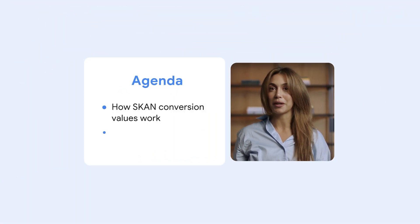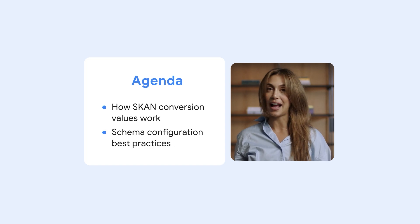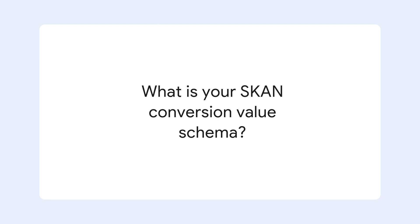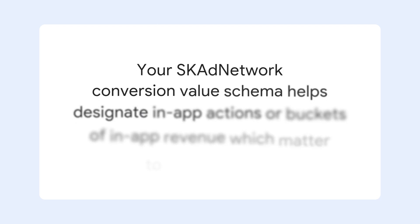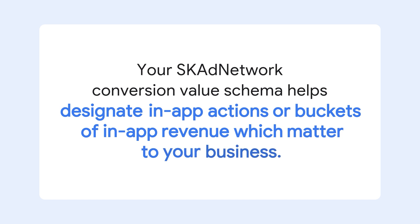We'll cover how SCAN conversion values work and best practices for configuring your schema for Google Ads. What is a SCAN conversion value schema? Your conversion value schema acts like a code — a series of numbers that designate discrete in-app actions or buckets of in-app revenue which matter to your business. Your schema is important to enable more comprehensive and accurate measurement for your in-app event performance and optimize your iOS campaigns for post-install actions or a target return on your ad spend.